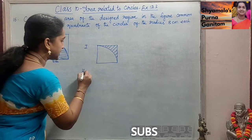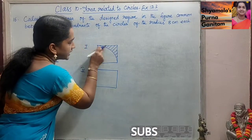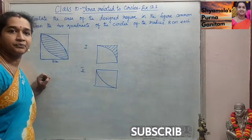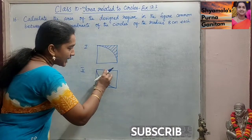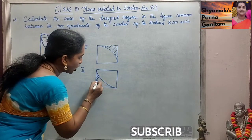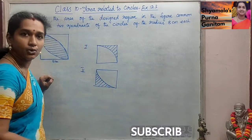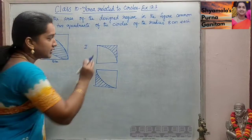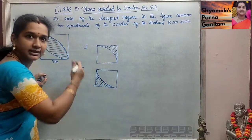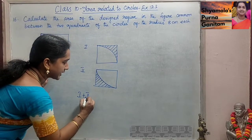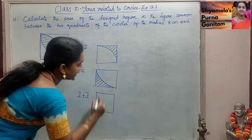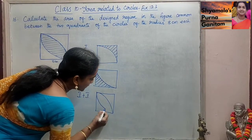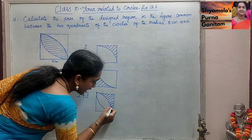The second step is: this first quadrant we have calculated; now we will take the other side quadrant. Area of the square minus area of this quadrant will give us the area of this shaded region. Next, when we add the first part and the second part and combine the area of these two parts, we will get the area of the outer shaded region.